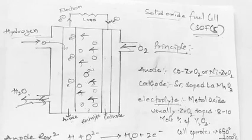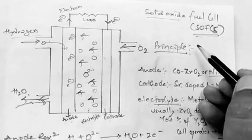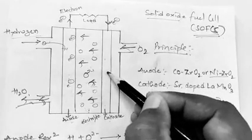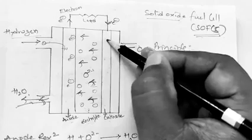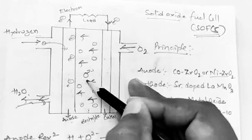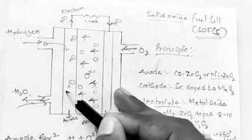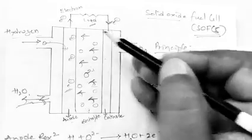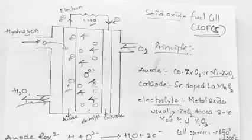Coming to the working principle: oxygen is supplied at the cathode compartment, where it reacts with incoming electrons from the external circuit and forms oxide ions (O²⁻). These oxide ions migrate through the ion-conducting electrolyte towards the anode. When they come in contact with hydrogen at the anode, a reaction occurs forming water molecules, and electrons are liberated. These electrons are withdrawn through the external load, making the process continuous.